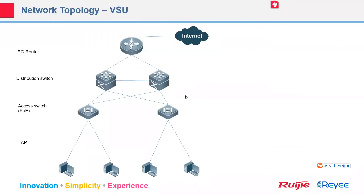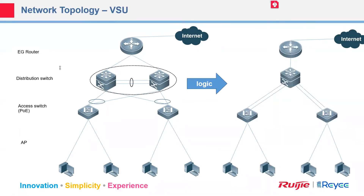We have some scenarios and solutions we can use — VSU for example. This topology shows that if we use link aggregation or other technologies to combine switches together logically, for the customer the topology appears as one unit. If two switches directly communicate with each other to become one unit, there is no loop, and we can use all the links together. Let's see the detail of the VSU.